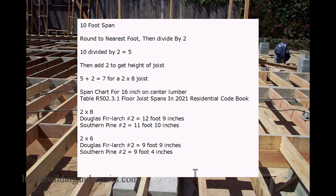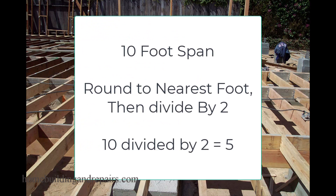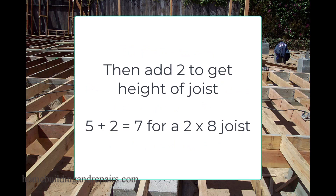Let me walk you through this with a 10-foot span. You will also need to round your number off to the nearest foot — I'll provide an example of that towards the end of the video. So let's divide 10 by 2, we get 5, then add 2 to get the height of the joist: 5 plus 2 is 7, giving us a 2 by 8 joist.